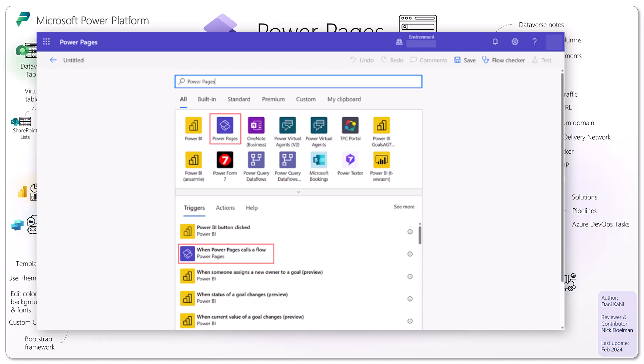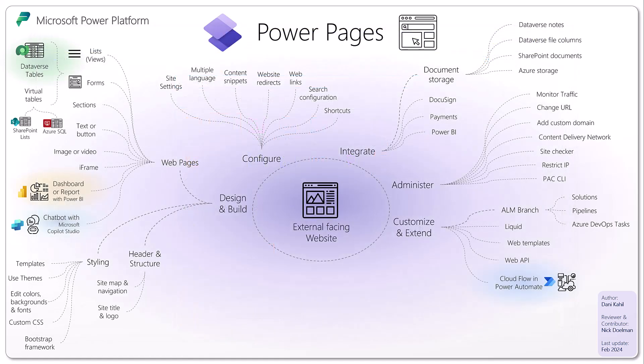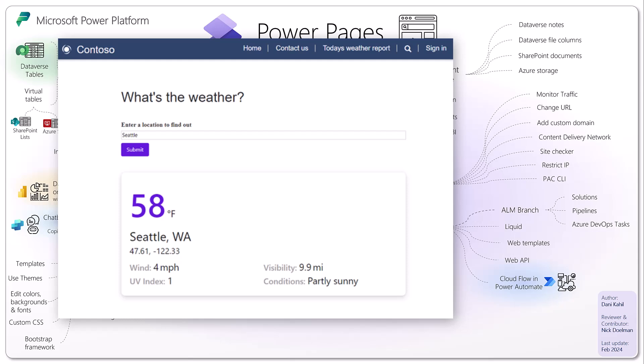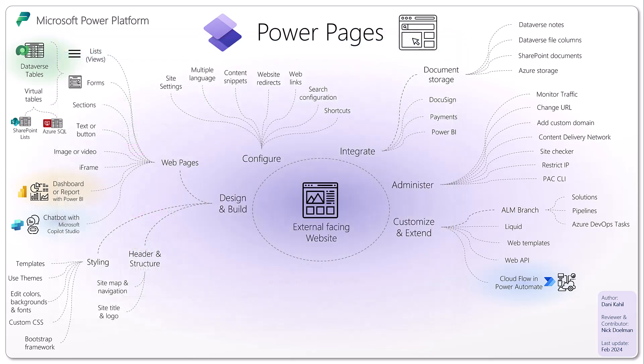With Power Automate you have access to thousands of connectors. For example, you can enter a city name on a Power Pages site, trigger a Power Automate flow that calls the MSN Weather Service, and display the weather report back on the website. Similarly, you could connect to shipping systems, currency conversion, or any other service. This is where Power Pages goes from low-code point-and-click to pro developer techniques capable of amazing things.